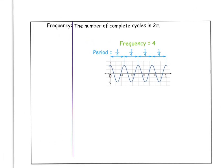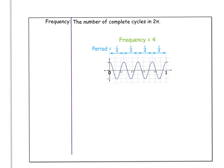The frequency is the number of complete cycles in two pi. So if zero to two pi contains one complete cycle, the frequency is one. If it contains two complete cycles, the frequency is two, and so on. How many times does it complete that full cycle within two pi — that's the frequency.